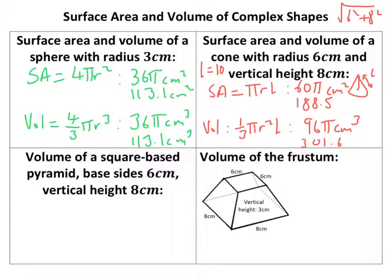Now then, the volume of a square base pyramid, base side 6, vertical height 8. Now, volume of any pyramid, cone's the same, is 1/3 the base area times the height. And that's ultimately what you've got here. It's 1/3 base area times the height.